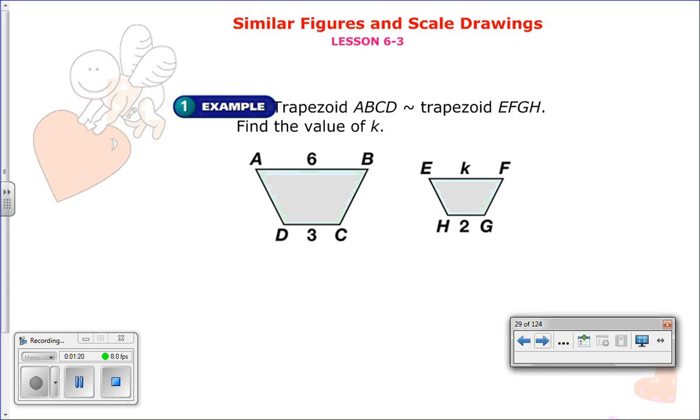So now we have this one. There is trapezoid ABCD as equivalent or corresponds to trapezoid EFGH. They want us to find the value of k. Well, the important idea here is we need to do the corresponding sides. We're going to create a proportion using the corresponding sides. For example, I start with this side AB. I know that it is six units long.